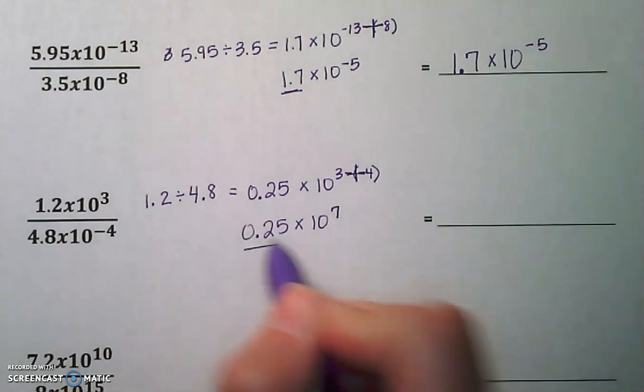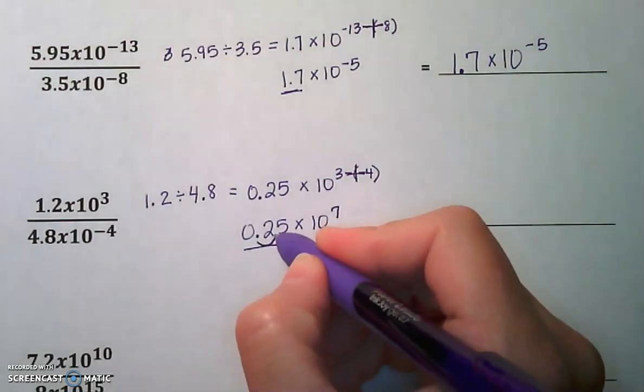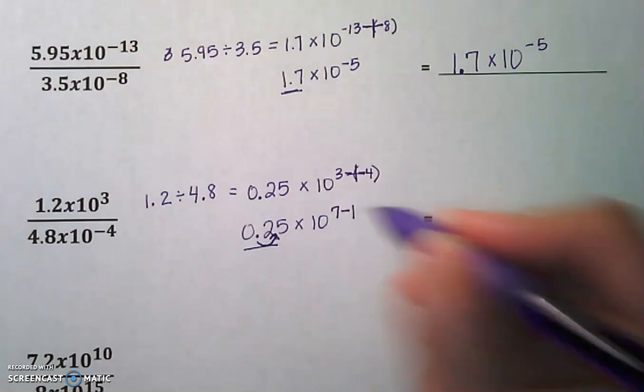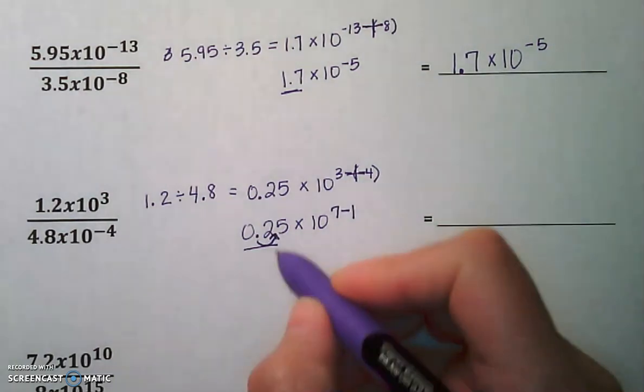Now, 0.25 is not between 1 and 10. It is less than 1. So we do have to move the decimal over to the right. When we move the decimal to the right, we have to subtract 1 from the exponent to take into account that movement of the decimal.